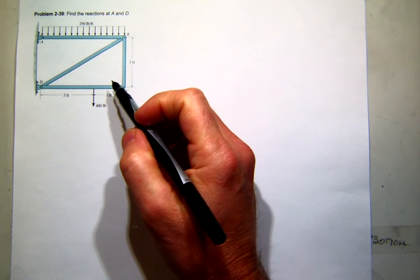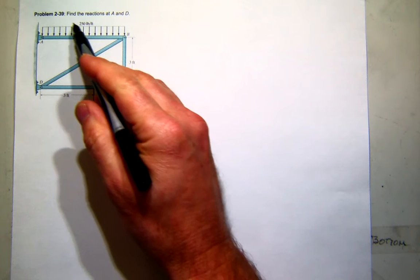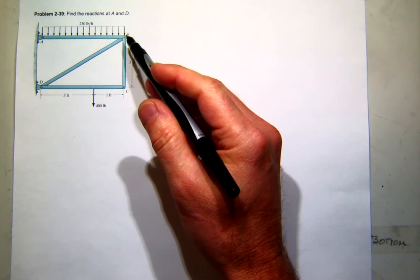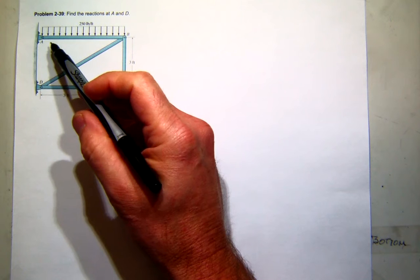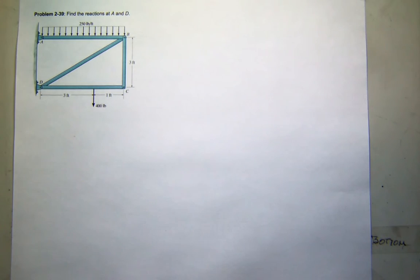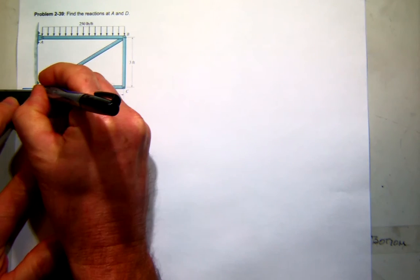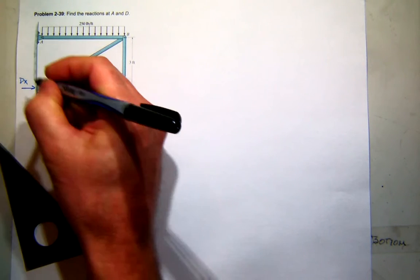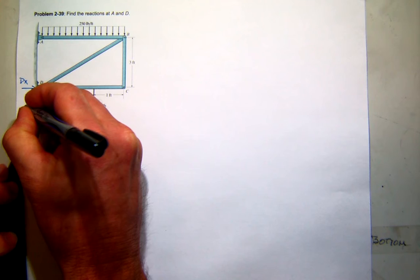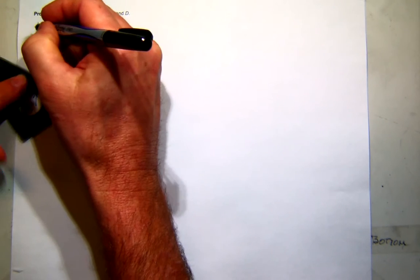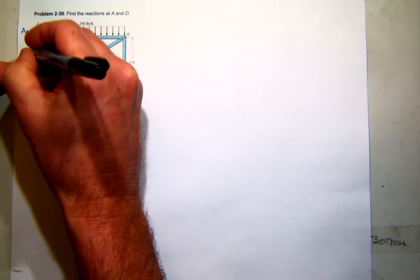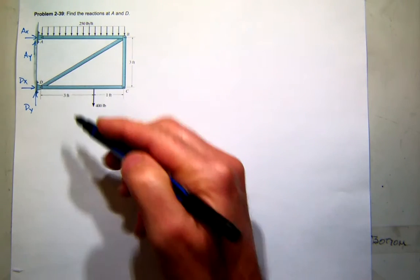Alright, so let's talk about this. This is a problem you had for homework. I believe it asked for the horizontal and vertical reactions at A and D. So just to help us visualize that, I'm going to draw those on there. So those are both pins. So I'm going to assume that I have a reaction in the x and y directions at D and at A. There's four reactions.